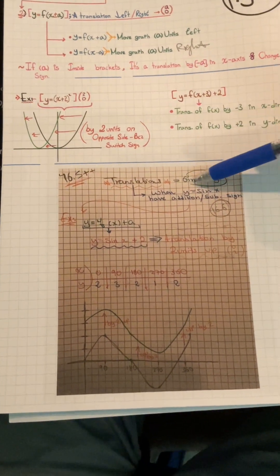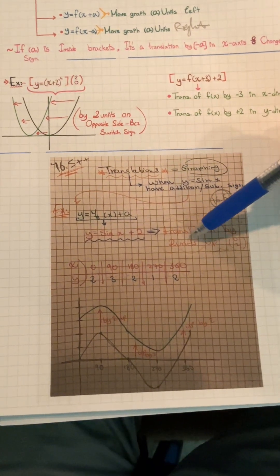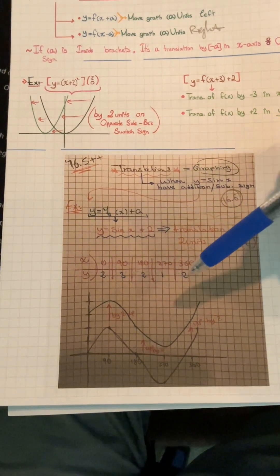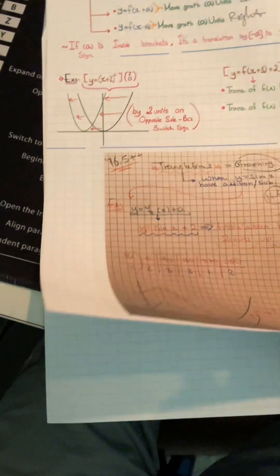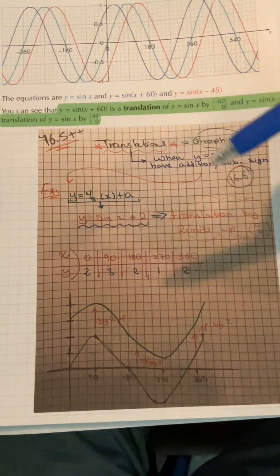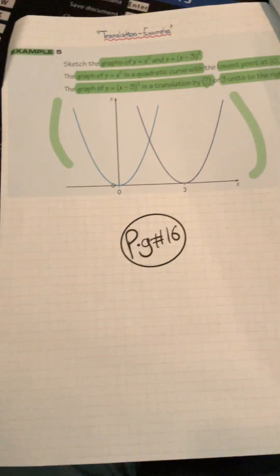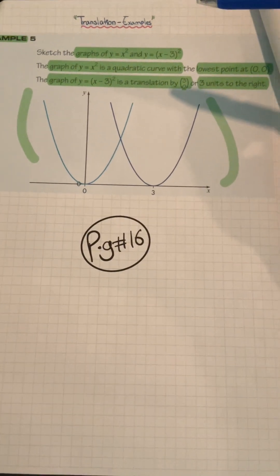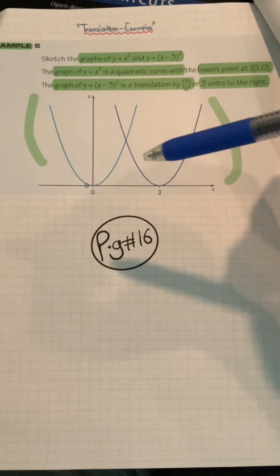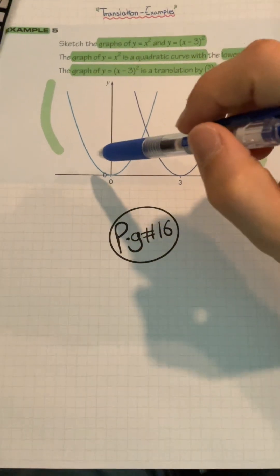For translations when graphing: y = sin x + 2, where a is outside the brackets, is a translation two units up. Using the normal x-values for y = sin x, the y-values become 2, 3, 2, 1 — just move the graph two units up. For y = (x - 3)², the graph of y = x² is a quadratic with lowest point (0, 0), so x - 3 is a translation 3 units to the right because a is inside the brackets — we use the opposite sign for a horizontal translation.